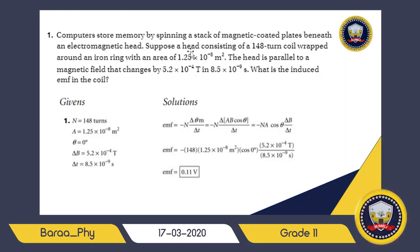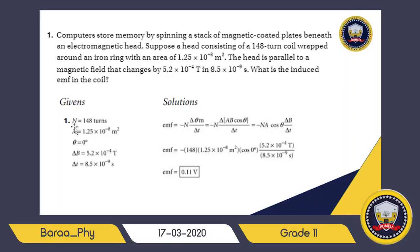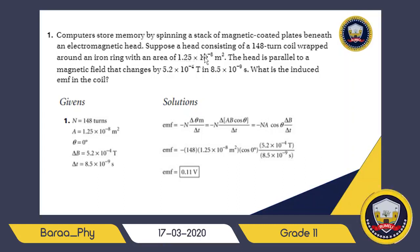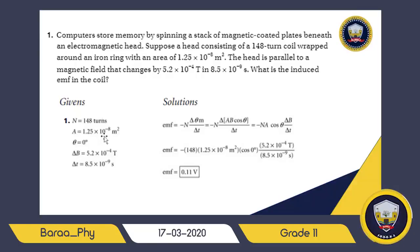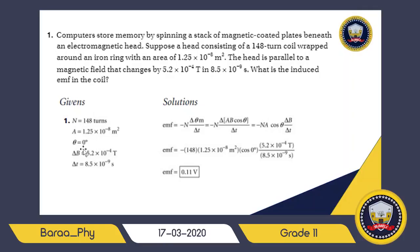The coil has 148 turns, so the first given is N equal to 148. The area is 1.25 times 10 to the negative 8 meters squared, so A equals 1.25 times 10 to the negative 8 m². The head is parallel to the magnetic field, which means theta equals 0, and we know cosine 0 equals 1, so we can simply ignore it.